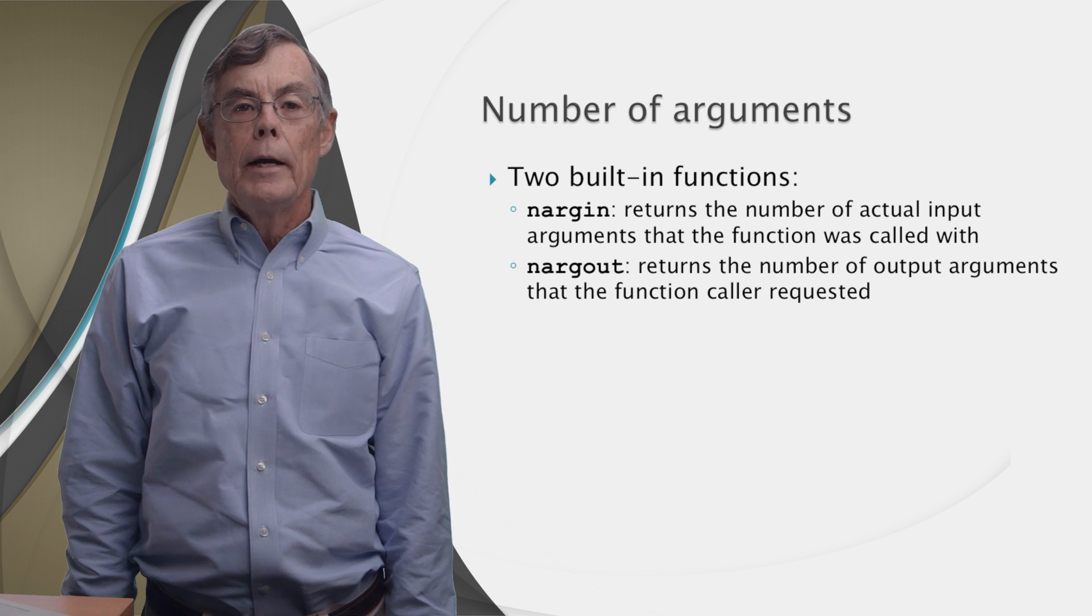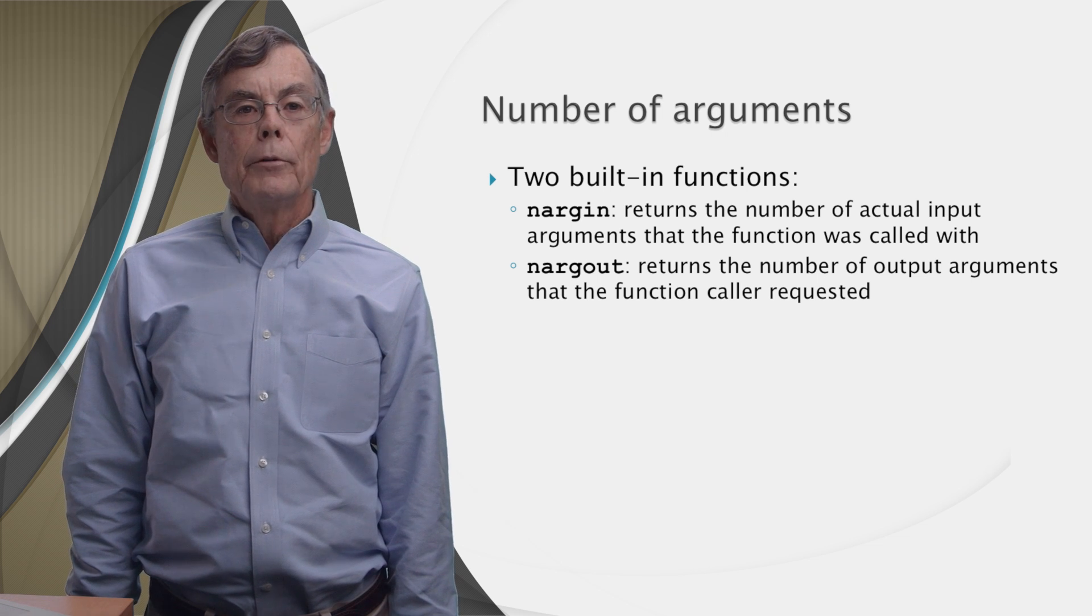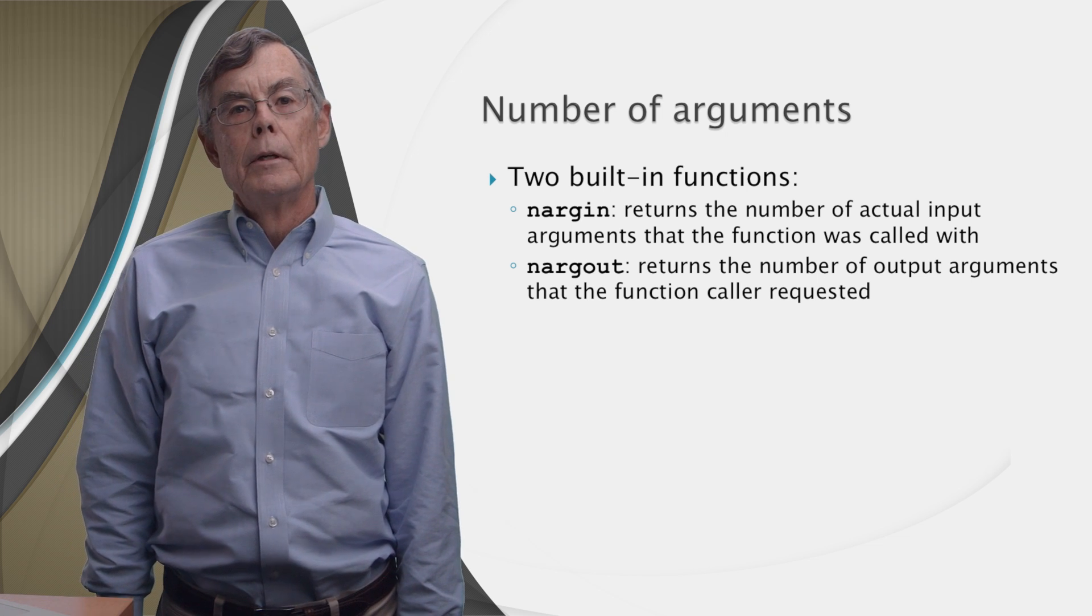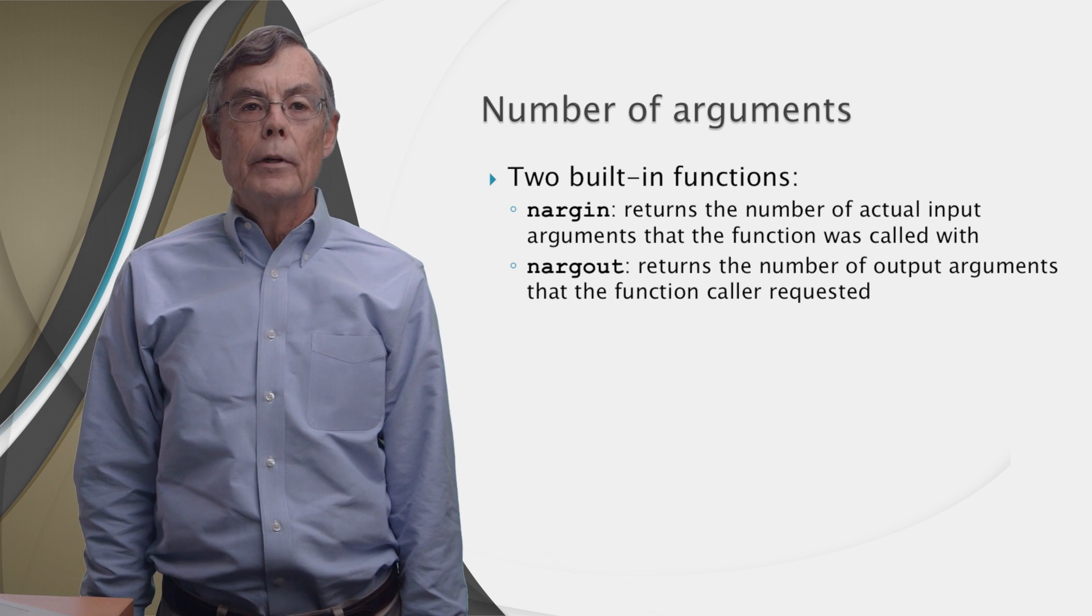The other one's nargout, or n-argout. It returns a number of actual output arguments that the caller requested. These two functions can be called from inside our functions to make our functions polymorphic.